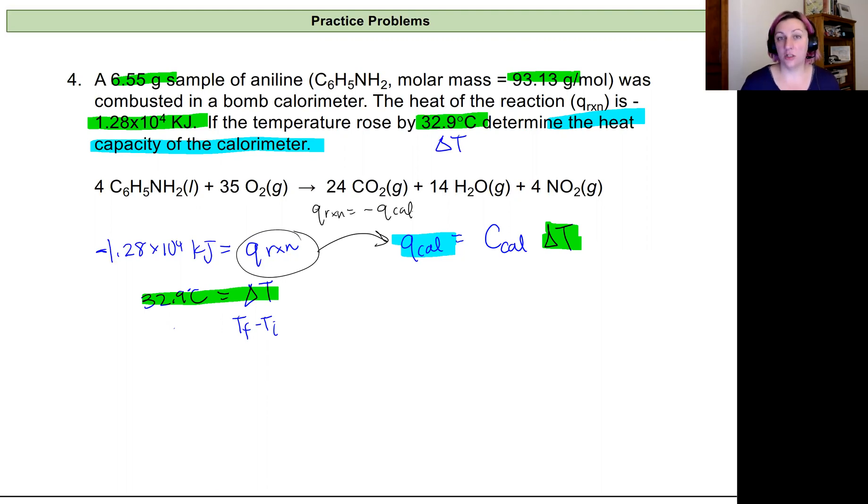So I can change the sign of that heat of the reaction and plug it in for my calorimeter heat. Instead of being negative 1.28 times 10 to the fourth kilojoules, I know that the heat is transferring into the calorimeter, so I can make that positive. So it'll be 1.28 times 10 to the fourth kilojoules equals the heat capacity of the calorimeter times 32.9 degrees Celsius.